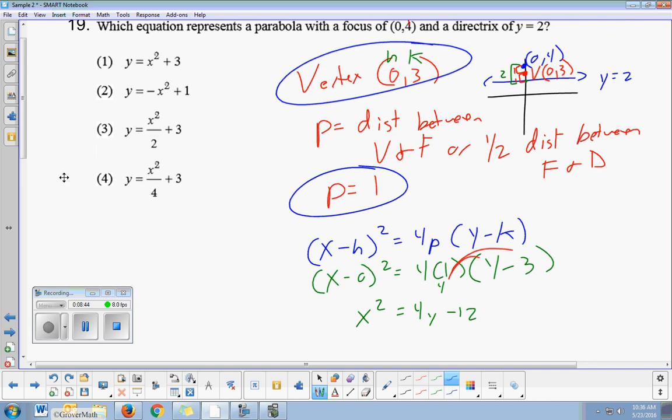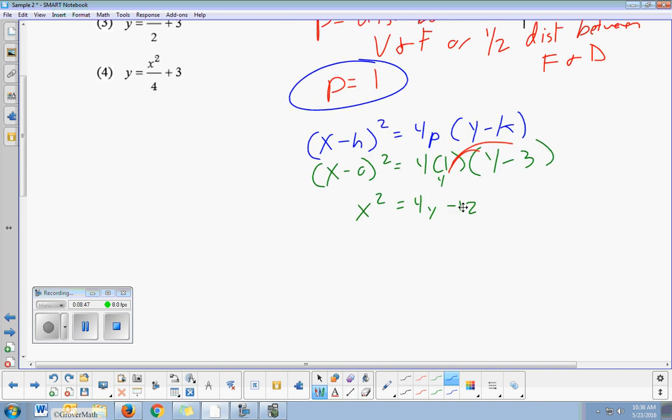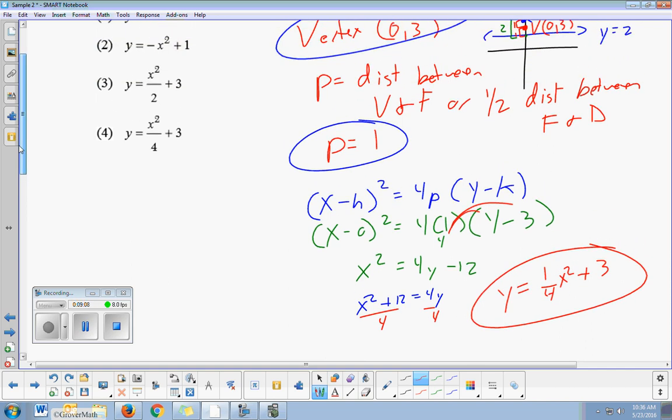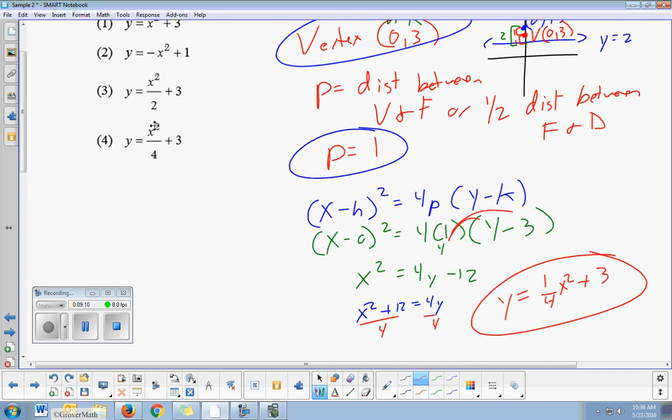And then lastly we just need to solve for y. See how these are all y equals parabolas? So to get y alone, I'm first going to add 12. And then lastly I'm going to divide by 4. And dividing x squared by 4 is, you know, one-fourth x squared. And divided 12 by 4 is 3. And we always divide everything on both sides when we divide. So that's my answer: one-fourth x squared plus 3. And one-fourth x squared is the same thing as x squared over 4, because that's 1 x squared over 4. And so my answer is choice 4.